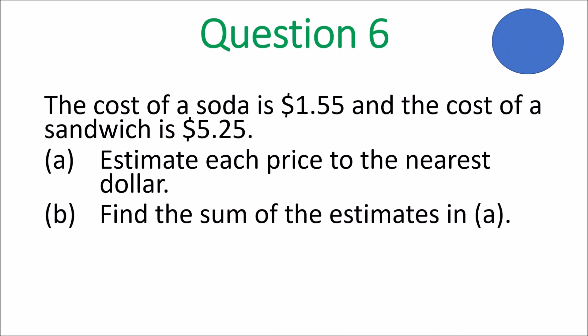And we move on to question six. The cost of a soda is one dollar and fifty-five cents, and the cost of a sandwich is five dollars and twenty-five cents. Part A: estimate each price to the nearest dollar. Part B: find the sum of the estimates in A. Once you have done the estimates, find the sum.